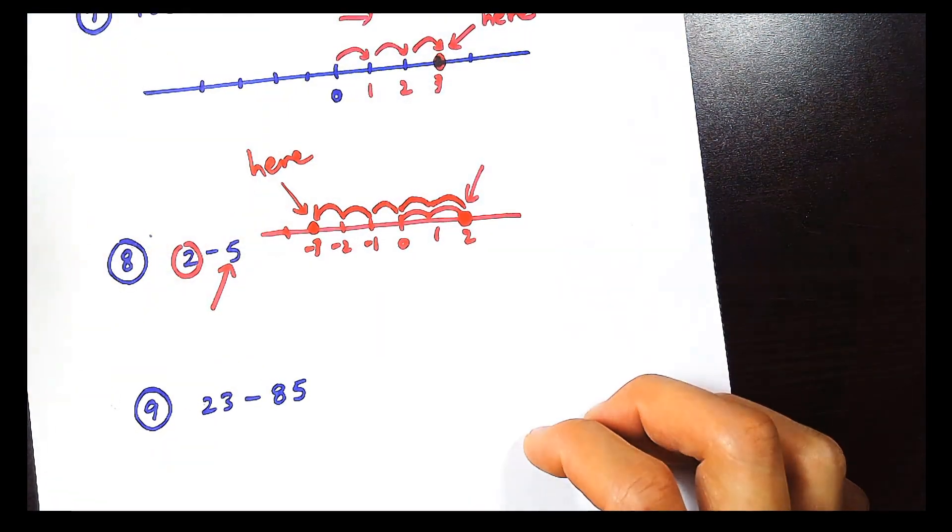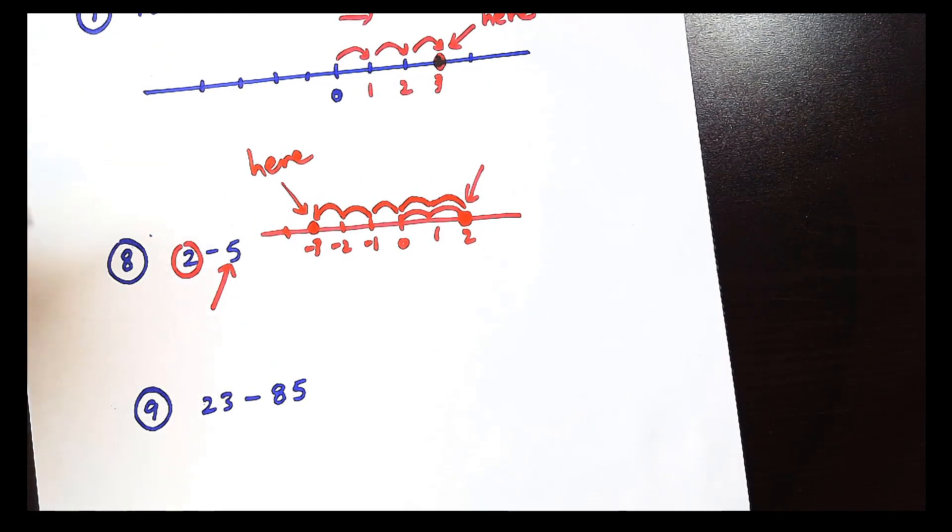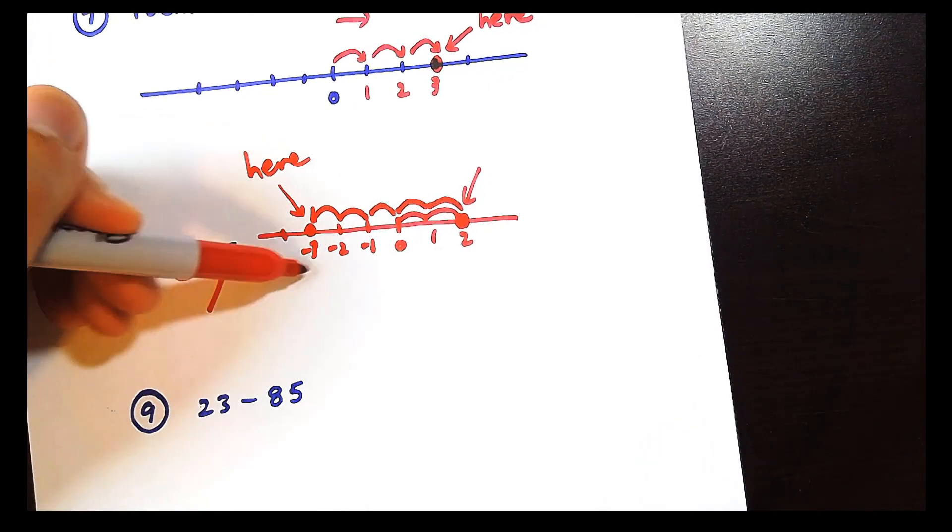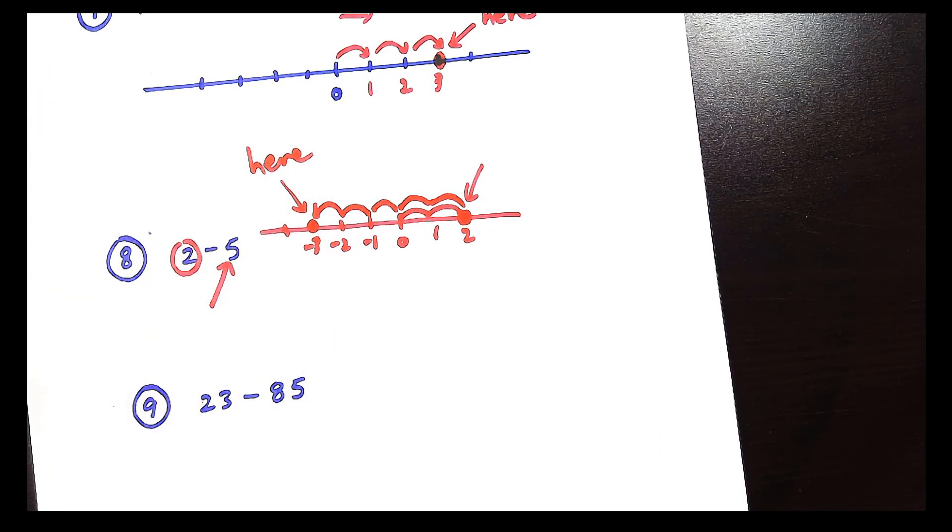Here. Which is negative 3 dollars. And it makes sense. If you have 2 dollars and you spend 5, you owe money. You have debt. This is worse than nothing.